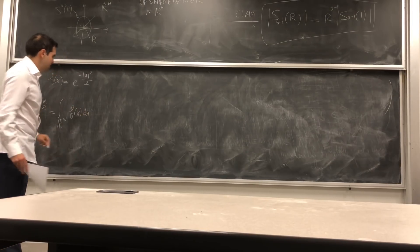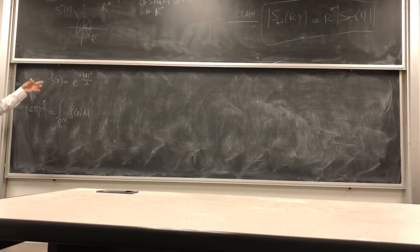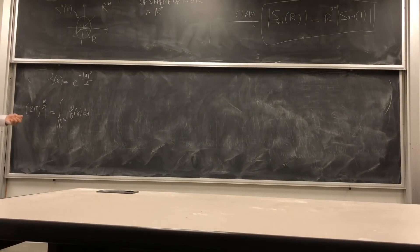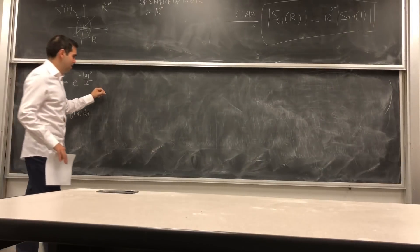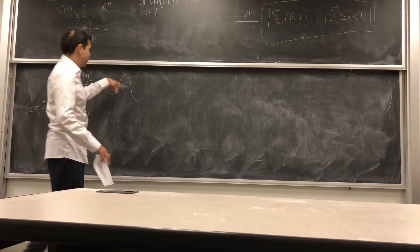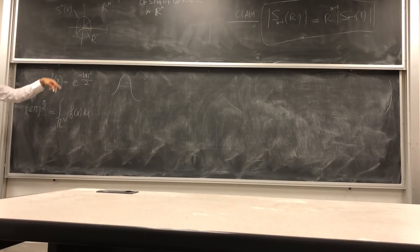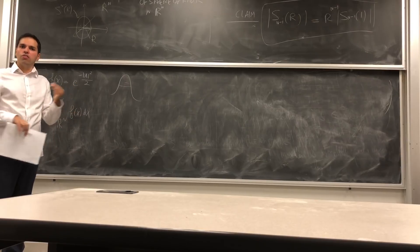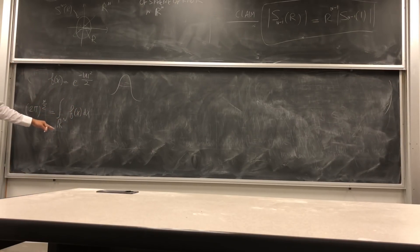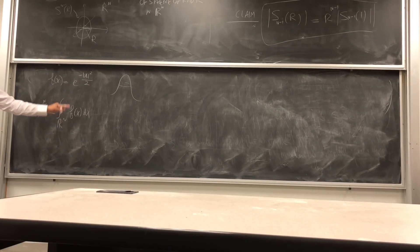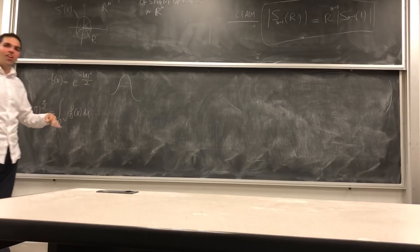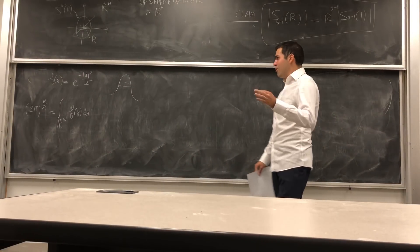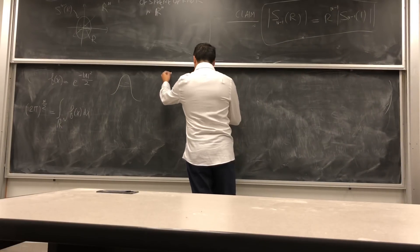The rest of the proof is finding another clever way to integrate f. Recall f(x) = e^(−|x|²/2), and we've established that its integral over Rn is (2π)^(n/2). This function is radial — it only depends on |x| — so it would be nice to have a polar coordinates formula for it.